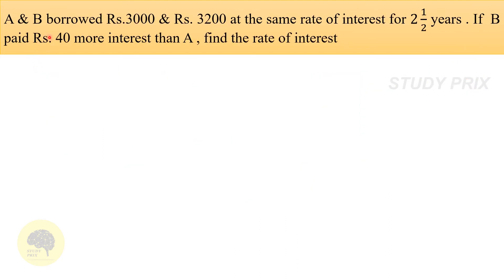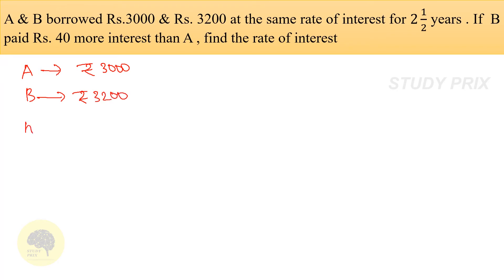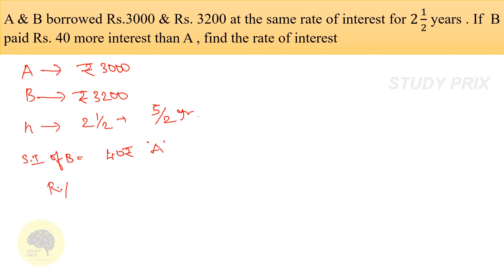Going to the next question: A and B borrowed rupees 3000 and rupees 3200 respectively at the same rate of interest for 2½ years. If B paid rupees 40 more interest than A, find the rate of interest percentage. Write down the data: A borrowed rupees 3000, B borrowed rupees 3200, time period is 2½ = 5/2 years, and SI of B is 40 rupees more than A.